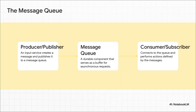So how does this actually work? A really common way is by using something called a message queue. Let's say you want to apply a filter to a photo. Your app, which we'll call the producer, doesn't do the work itself. It just fires off a little message — a job — into a queue. That job just sits there, kind of like in a waiting room, until a background worker, the consumer, is free to grab it and do the actual processing. Meanwhile, the app is totally free, waiting for your next tap.